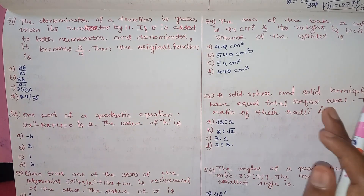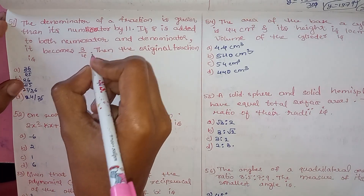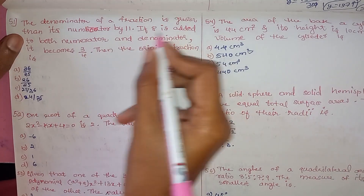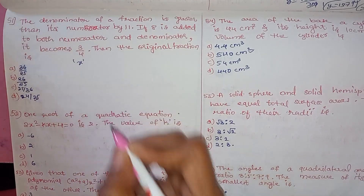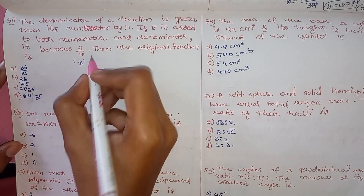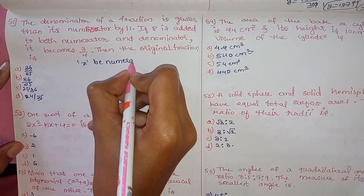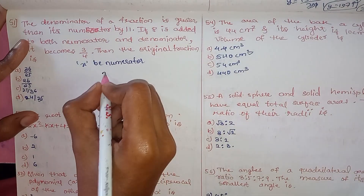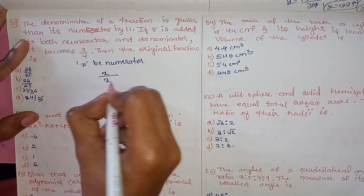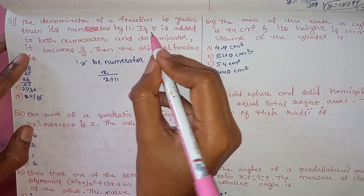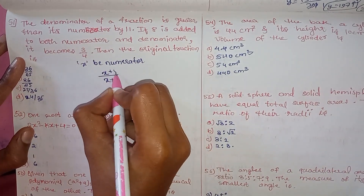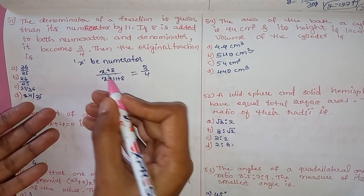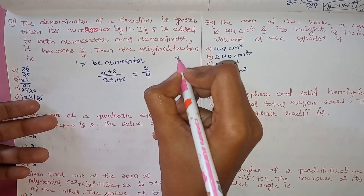Let's solve and find the answer. What they are saying is the denominator of a fraction is greater than its numerator by 11. Let's take x as the numerator. The denominator of a fraction is greater than its numerator by 11, so we will add 11. If 8 is added to both numerator and denominator, this fraction should be equal to 3/4. The original fraction should be x divided by x plus 11.